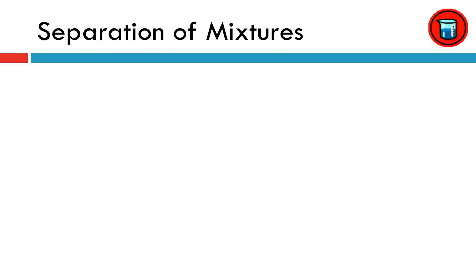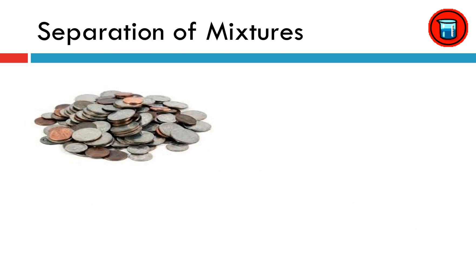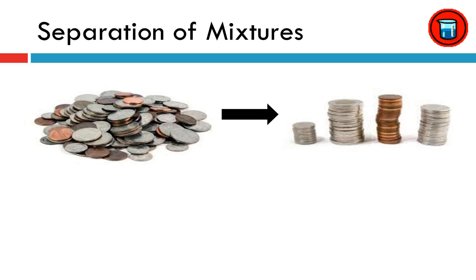All right, so let's look at another example of separating a mixture. Let's say you've got this big pile of coins and you want to separate them into quarters, nickels, pennies, and dimes. You could accomplish this a variety of ways.